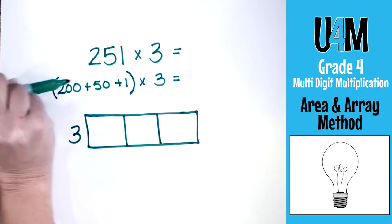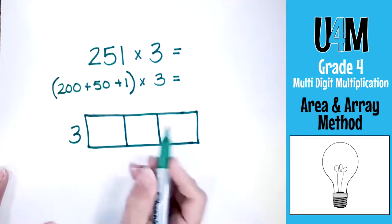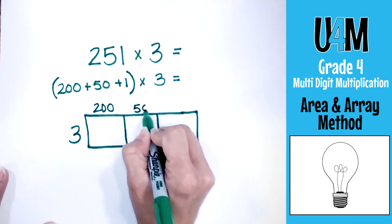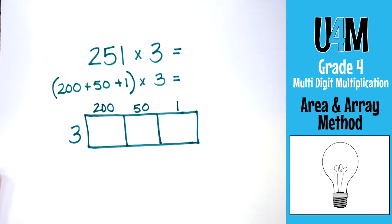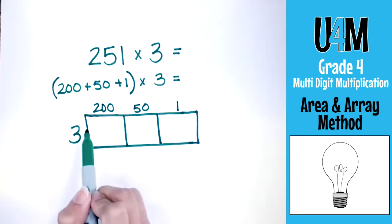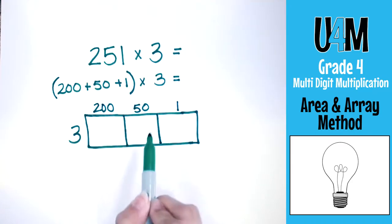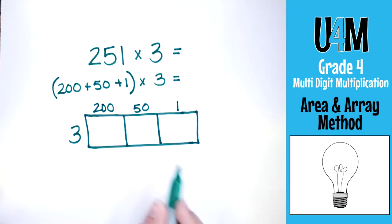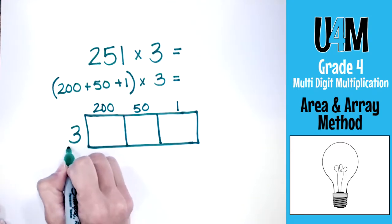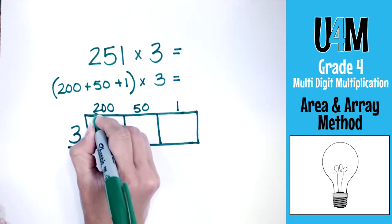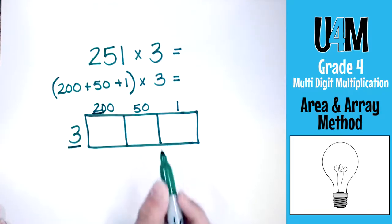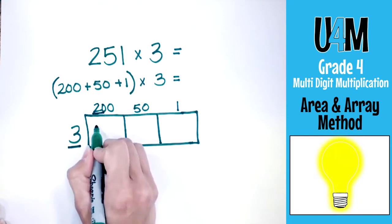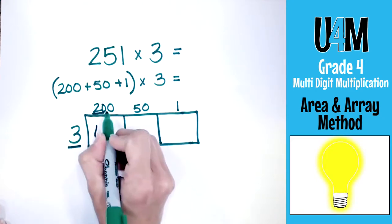Now I'm going to take each of these decomposed parts and put them on top of the boxes: 200 here, 50 here, and 1 here. Now we're going to take the 3 and multiply it by each of these numbers separately and put the products in the box. I'll use my understanding of multiplying by multiples of 10, 100, and 1,000. For this first one: 3 times 2 is 6 — the basic fact — then add two zeros, giving 600.